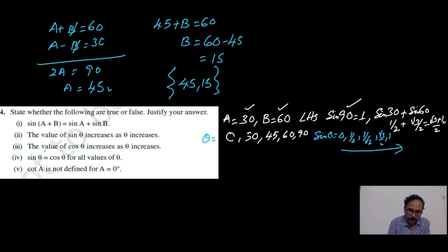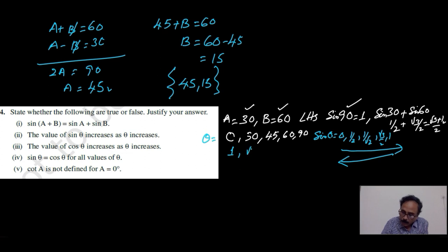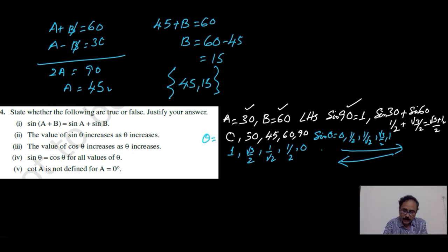Now the third one: the value of cosθ increases as θ increases — that is wrong. Why? We have written the reverse values for cos. That is when cos0 is 1, cos30 is root 3 by 2, cos45 is 1 by root 2, cos60 is half, cos90 is 0. That means we are decreasing the values. The cos series is being decreased. Therefore it is not true. So the second statement is a true statement, and this third one is a false statement.